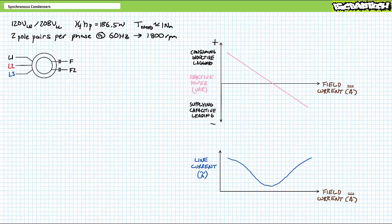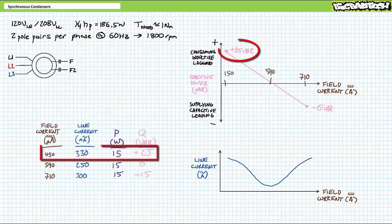First, we need to determine this particular device's upper and lower ranges of reactive power. At a minimum field excitation current of 450 mA DC, the synchronous condenser draws 300 mA of line current per phase lagging by around 60 degrees and consumes roughly 15 watts of real power to overcome friction and positive 25 VARs of reactive power. In this underexcited state, each winding appears to be inductive in nature — this is the most positive reactive power each winding would be capable of consuming.